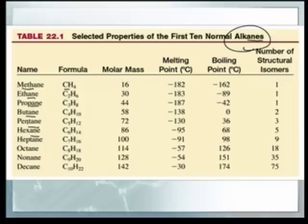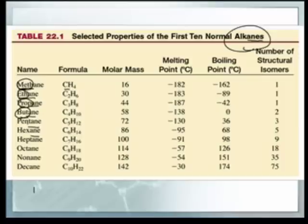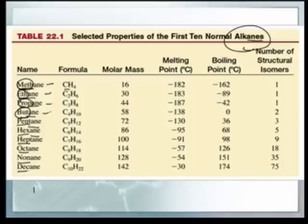It's important to know what the prefixes meth-, eth-, prop-, but-, etc. mean. If you've got one carbon, the prefix is meth-; two is eth-; three is prop-; four is but-. Those are the hard ones to memorize. My mnemonic: my elephant plays basketball — methyl, ethyl, propyl, butyl. After that: pent- for five like a pentagon, hex- sounds like six, hept- is seven like heptathlon, oct- is eight like octopus, non- is nine, and deca- is ten like a decade. You need to know these prefixes, and the '-ane' ending tells you it has only single bonds.